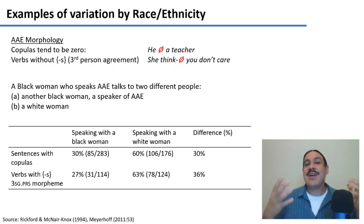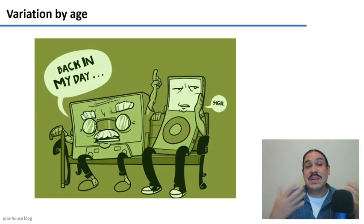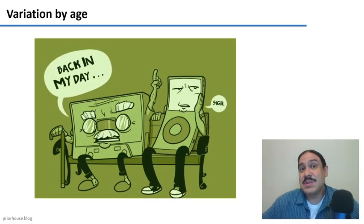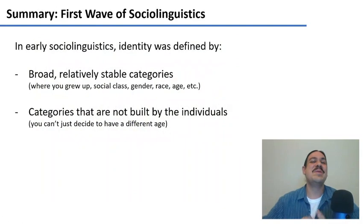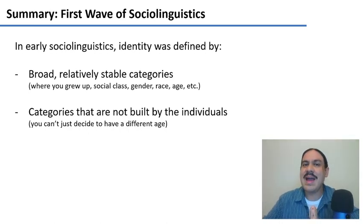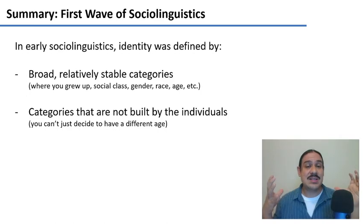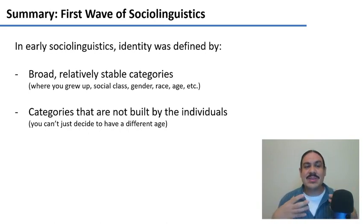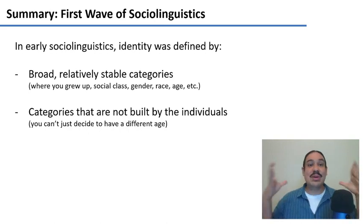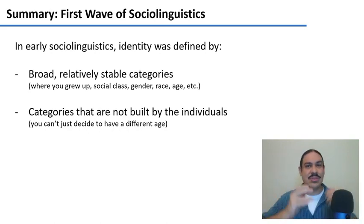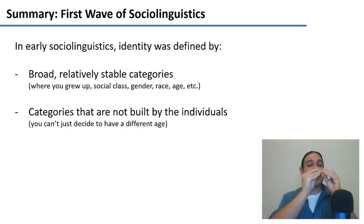We all do this — we have identities, but we also accommodate to the people we're speaking to. Age is another source of variation, as there are plenty of words you use differently from your parents. These are the broad categories — social class, gender, race, age — used in the very first studies of sociolinguistics to explain how language varies. These characteristics are not built by you; you don't get to decide what age you are or where you grew up. In the next video, we'll study how sociolinguistics switched from these broader categories to categories that people build themselves.